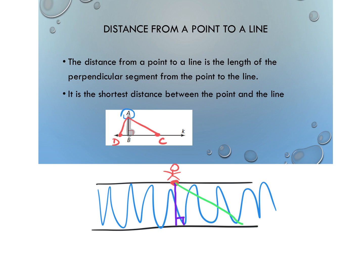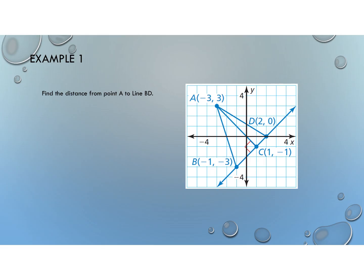So remember, whenever you're trying to find the distance from a point to a line, you're going to look for the segment that has the right angle — you're looking for the perpendicular segment. Here is an example.